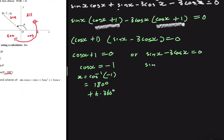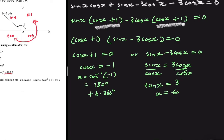Now, sin(x) minus 3cos(x) equals zero means sin(x) equals 3cos(x). If I divide both sides by cos(x), I end up with tan(x), so tan(x) equals 3. Therefore x equals tan inverse of 3, which gives x equals 71.57 degrees, plus k multiplied by the period of tan, which is 180 degrees, where k is some integer.